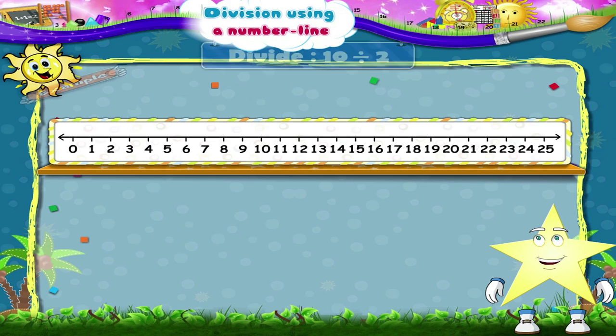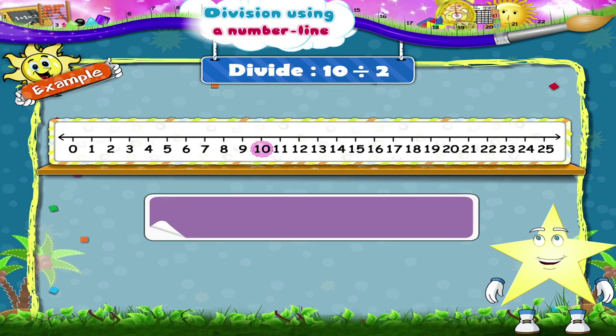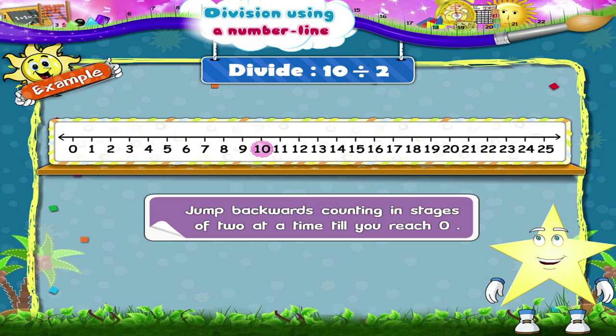Consider the example 10 divided by 2. Now Starry, go on the number 10. Then you have to jump backwards counting in stages of 2 at a time till you reach 0.